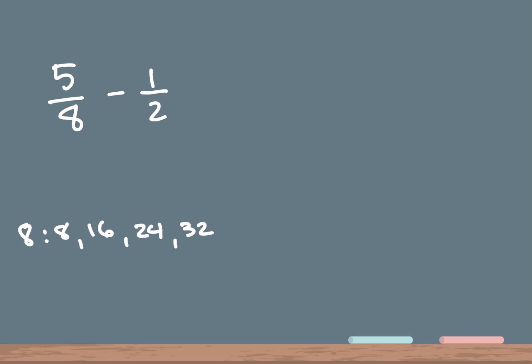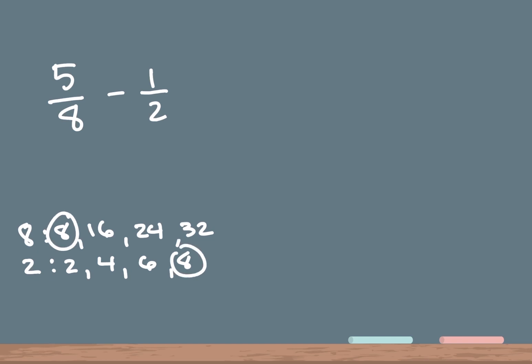Now I'm gonna do the next number, which is 2. So 2 times 1 is 2, 2 times 2 is 4, 2 times 3 is 6, and 2 times 4 is 8. So now we have a common denominator of 8 — right here and right here.